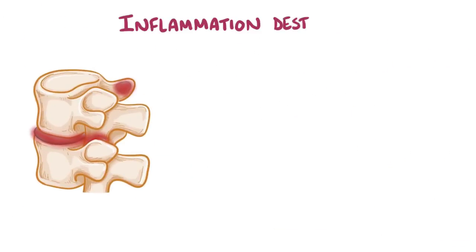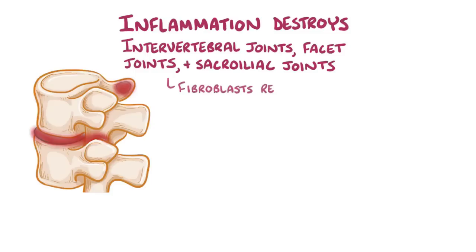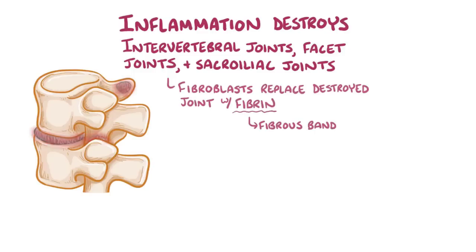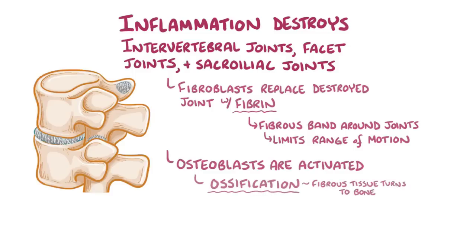Over time, the inflammation destroys the intervertebral joints, as well as the facet joints and the sacroiliac joints, and fibroblasts replace the destroyed joint with fibrin. Layers and layers of fibrin form a tough fibrous band around the outside of the joints, which limits their range of motion. Eventually, osteoblasts get activated, and a process called ossification will start, which is when the fibrous tissue turns to bone. In the beginning, small bony outgrowths will form at the joint edges, called syndesmophytes.